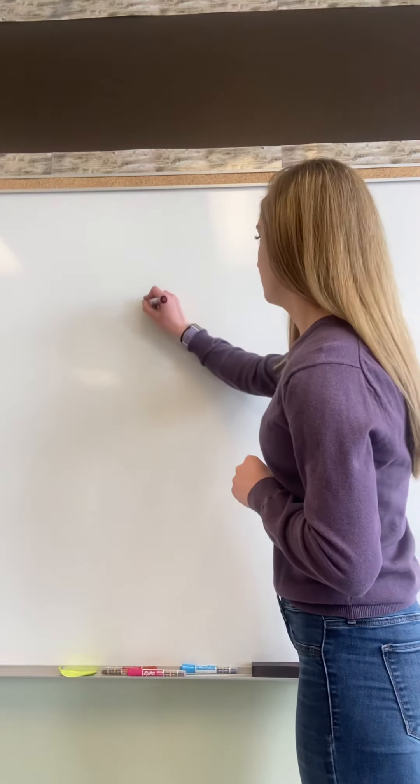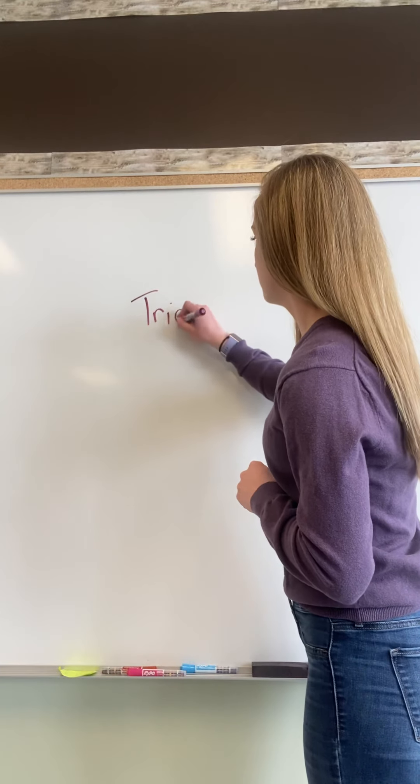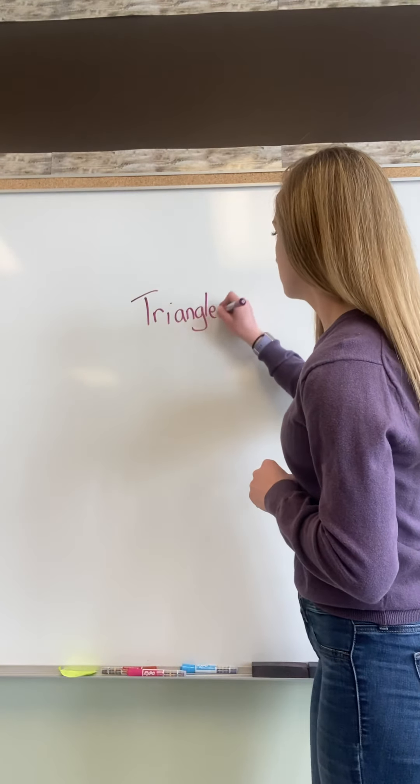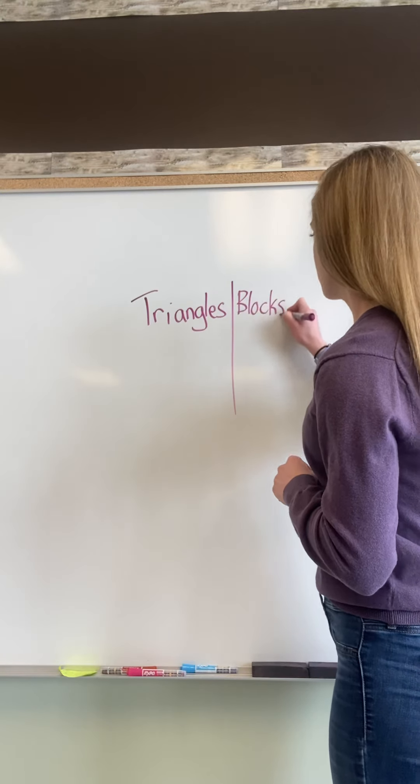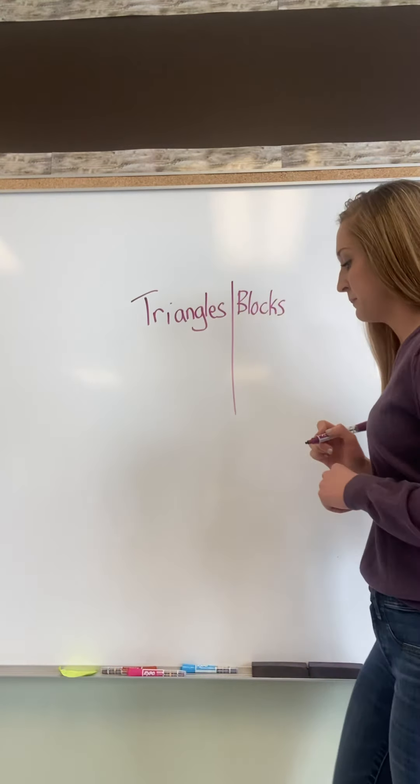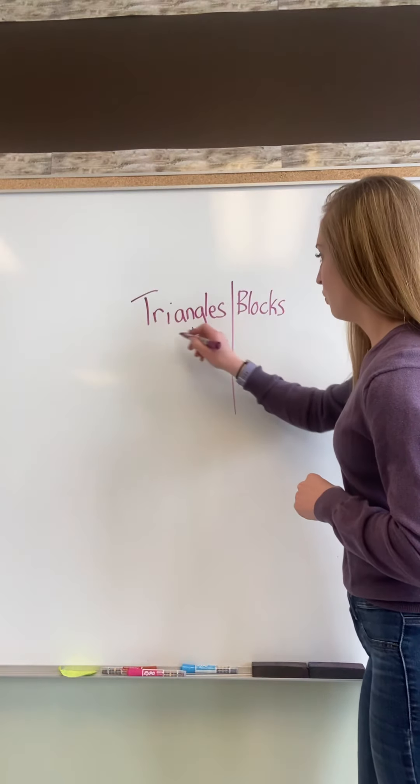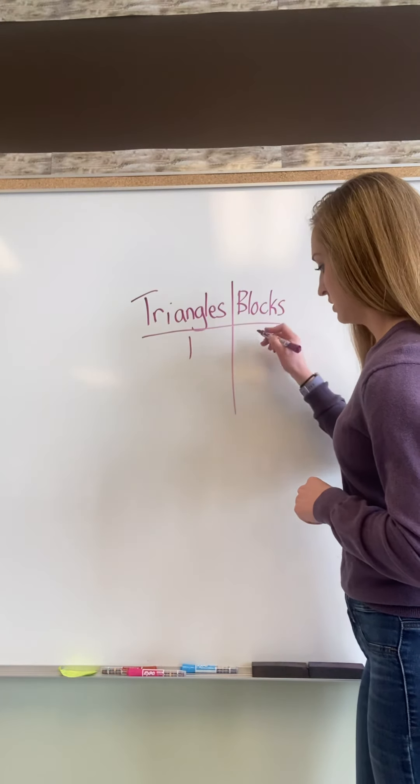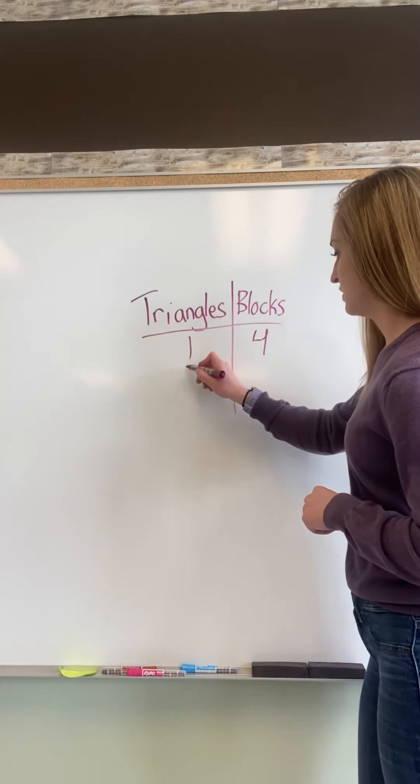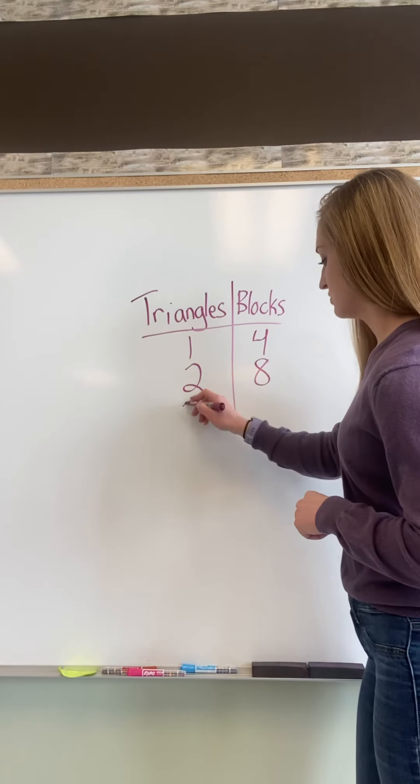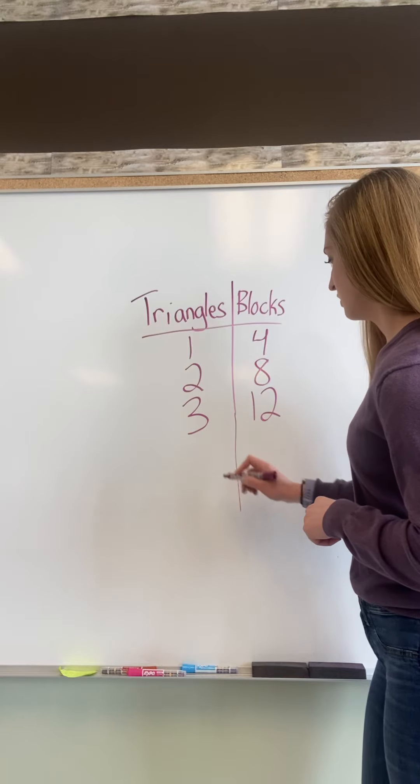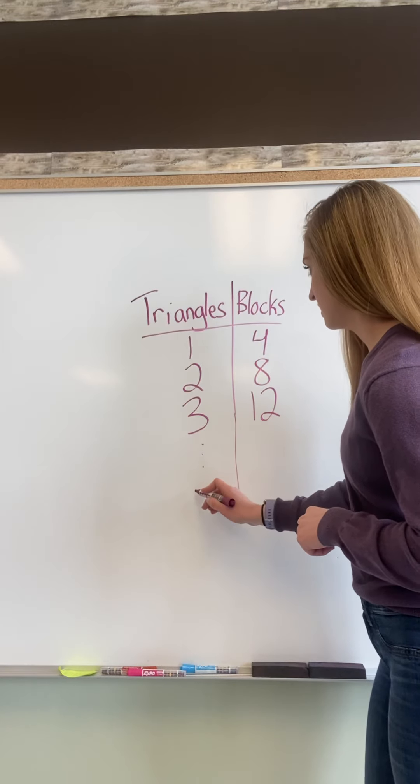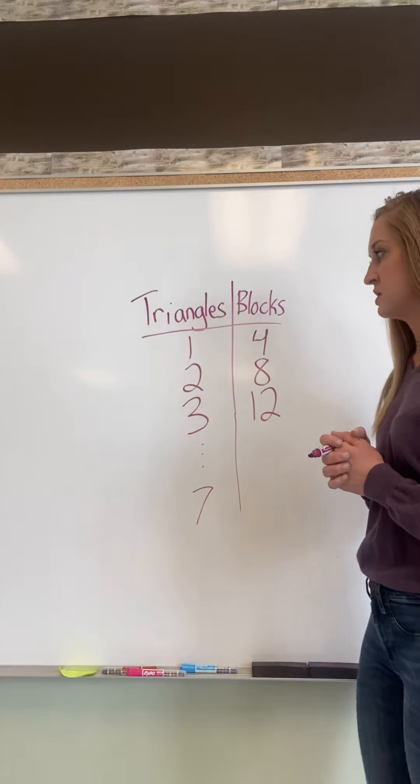Say we're going to build something and we're going to be using some triangles and some blocks. If I have one triangle I'm going to use four blocks. If I use two triangles I'm going to use eight blocks. If I use three triangles I'm going to use twelve blocks. So what I want to figure out here is if I had seven triangles, how many blocks would I have.